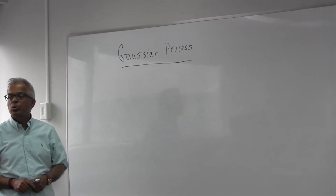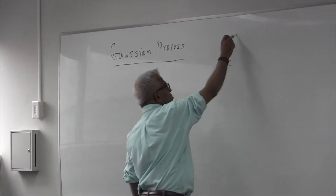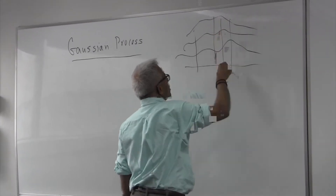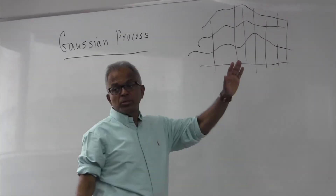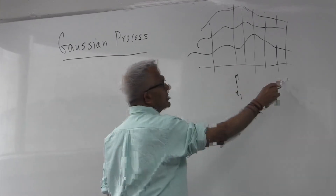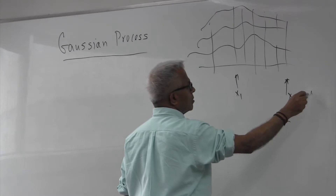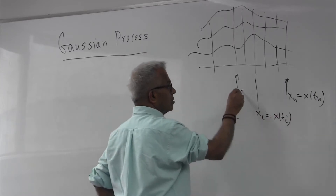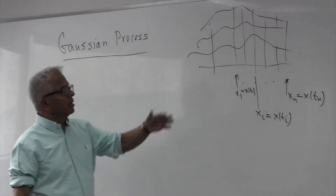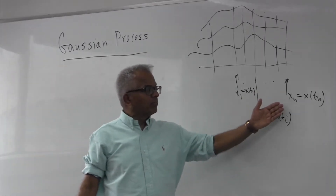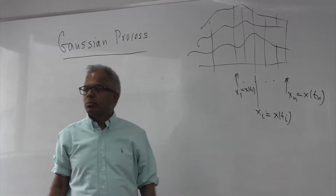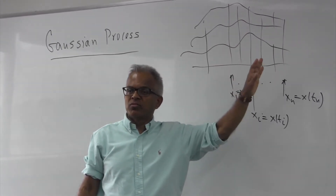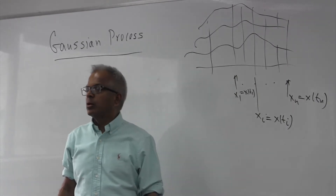The question is: how do you characterize a Gaussian process? A Gaussian process has a bunch of realizations. If you take n time steps, you get random variables x1 through xn. If the joint density function of these n random variables is jointly Gaussian for any arbitrary time instances t_i and any number n, then we call the process a Gaussian process.